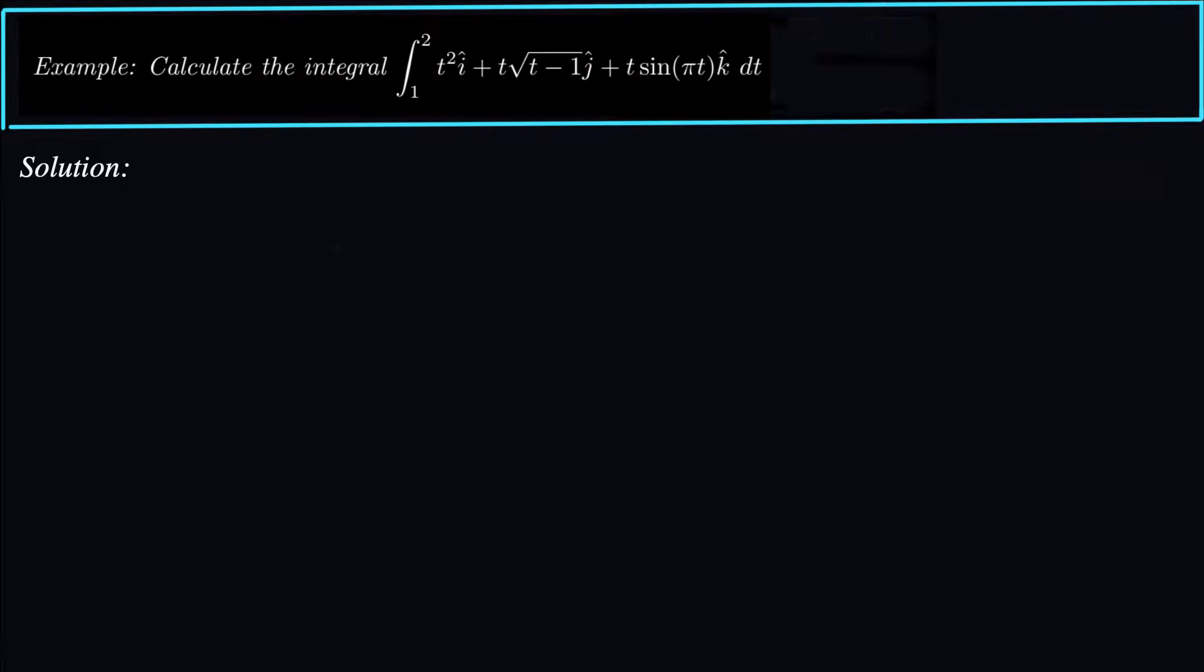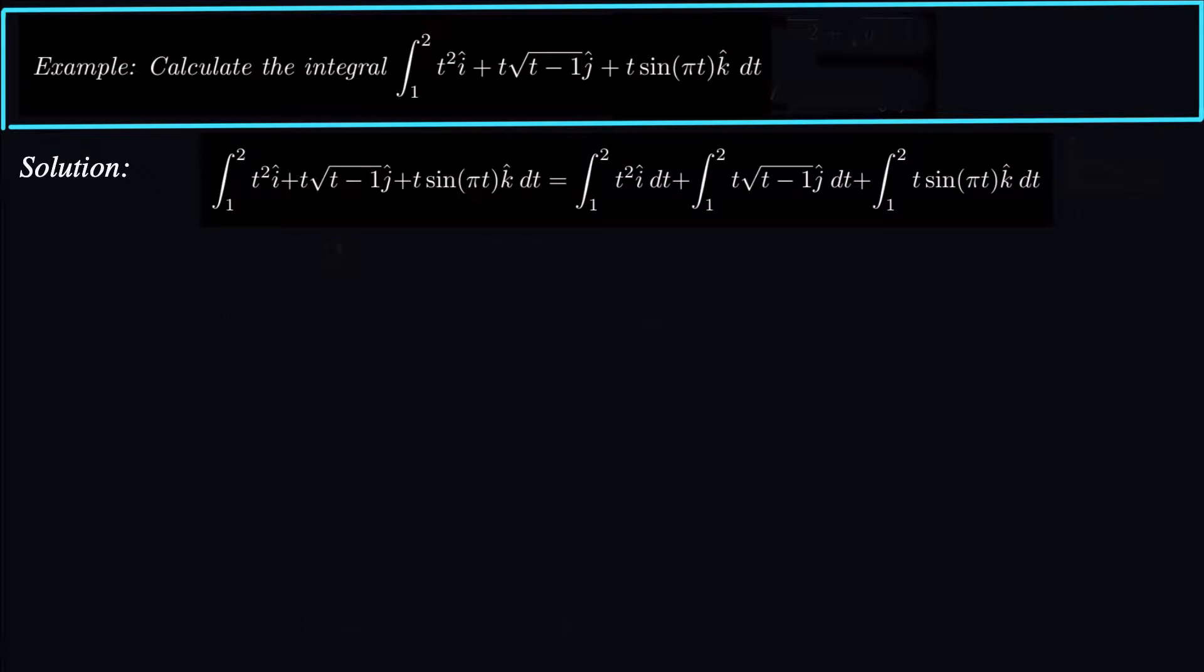So integrating a vector function really just requires you to integrate each piece over that domain. Basically the integral is going to become the integral from 1 to 2 t² i hat dt plus integral from 1 to 2 t times square root of t minus 1 j hat dt and then integral from 1 to 2 t sine πt k hat dt. So we really just have to integrate three different pieces.